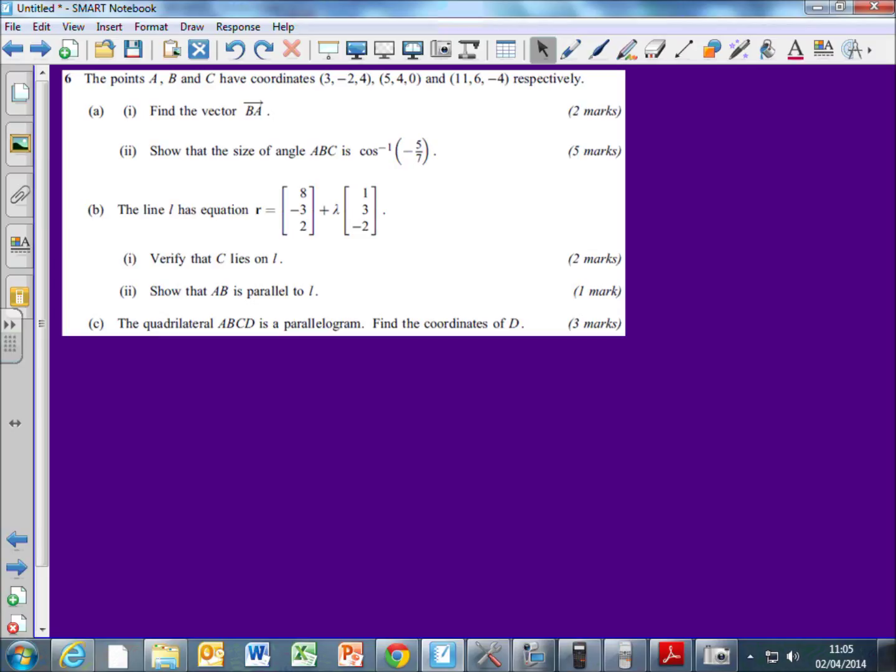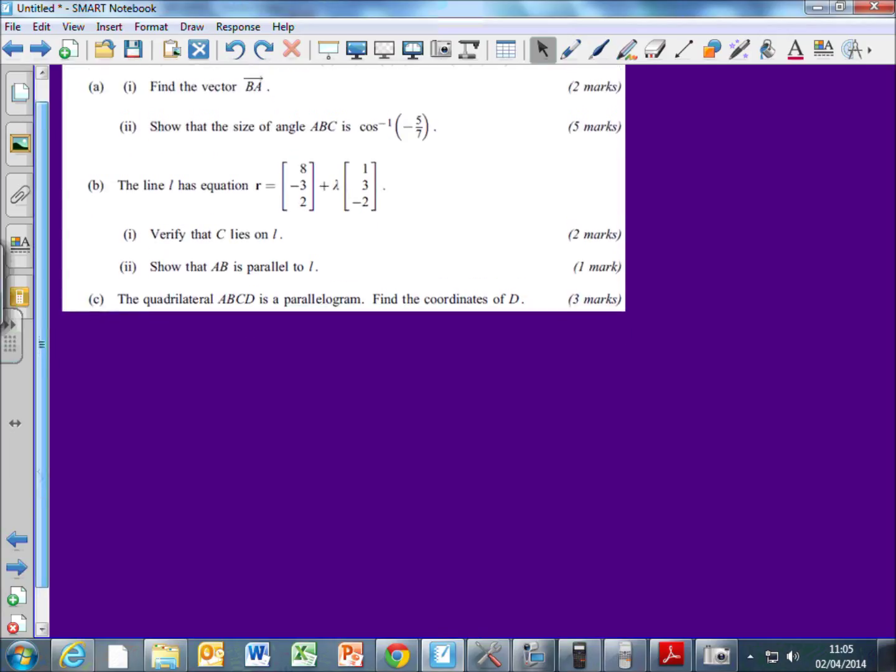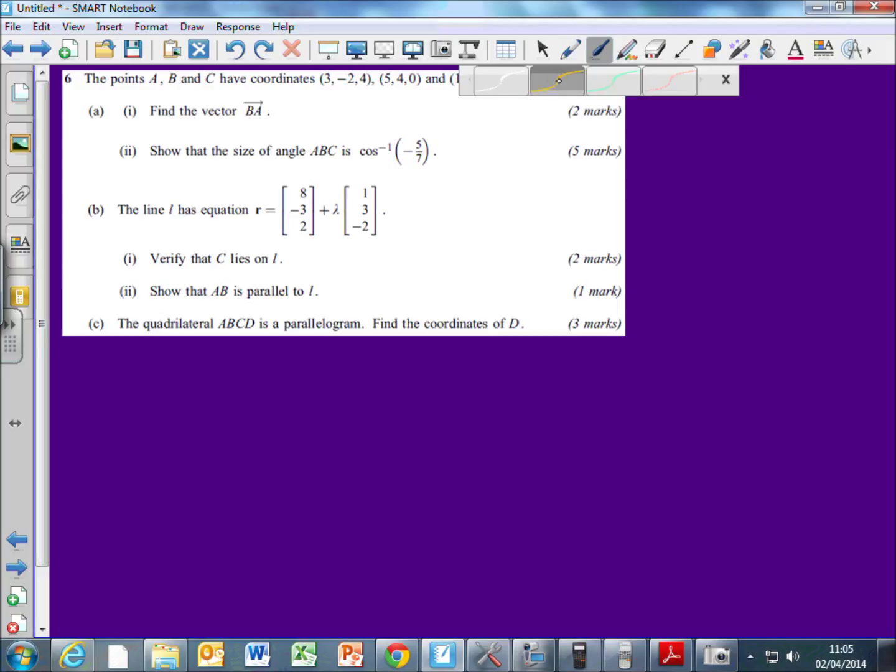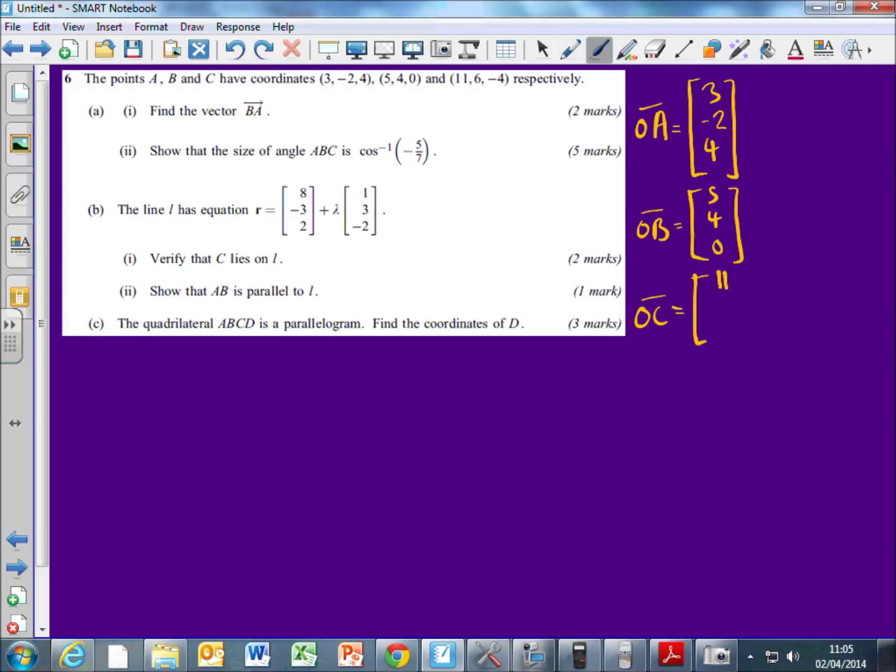I'm just going to rewrite those coordinates as position vectors first, because I'm going to be dealing with vectors. So I'll put them up over here. O to A, because it's a position vector, is going to be 3, negative 2, 4. And then we'll have O to B, is 5, 4, 0. And then we've got O to C, is 11, 6, negative 4. So I'm just going to write them as vectors rather than coordinates.